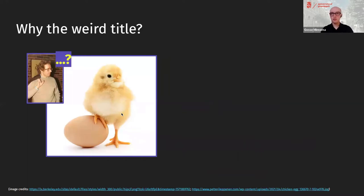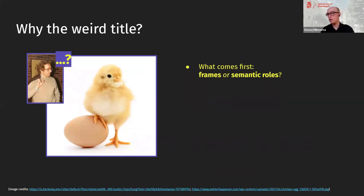I should explain this somewhat weird title. What does Fillmore have to do with eggs? It's a rather shallow metaphor. This paper is about the chicken-or-egg problem of frames and semantic roles — basically, what comes first, what depends on what, and how can you apply that when dealing with frame semantic parsing?